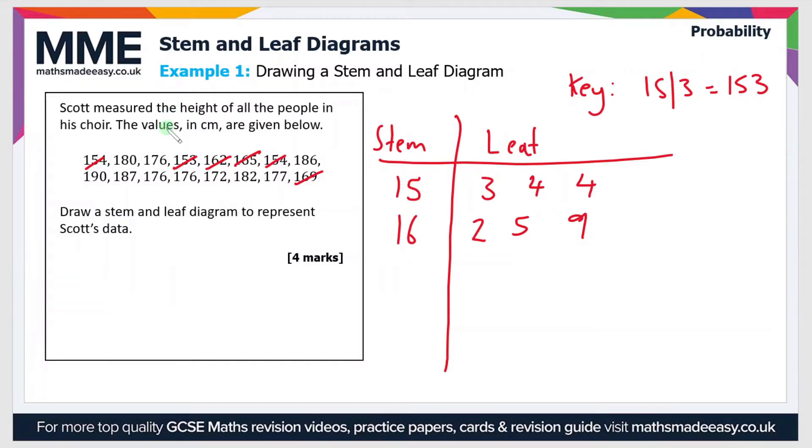So if we move on to the values in the 170s then the next one will be 172 so I'll add that to the diagram. And then we have 176 and now that appears three times so we add it three times to the diagram. And then we have 177 so that is there.